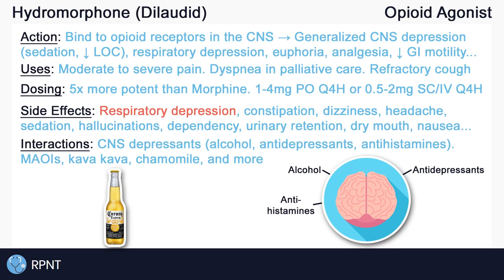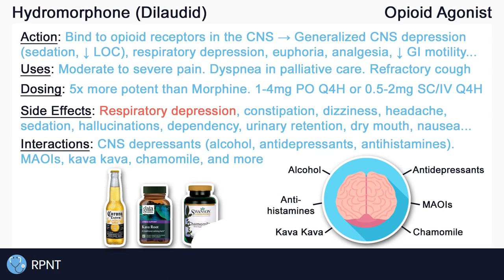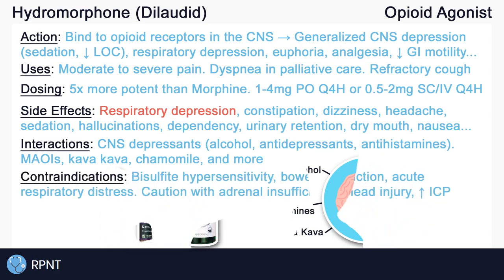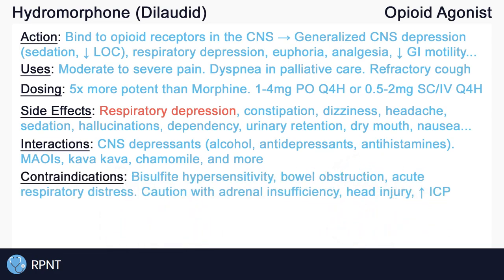Monoamine oxidase inhibitors, or MAOIs for short, may also increase the effects of hydromorphone, increasing the risk for CNS or respiratory depression. There are also some herbs that may increase the effects of hydromorphone, including kava kava, chamomile, and more. Some hydromorphone formulations contain bisulphites; therefore, hypersensitivity to bisulphites is a contraindication.